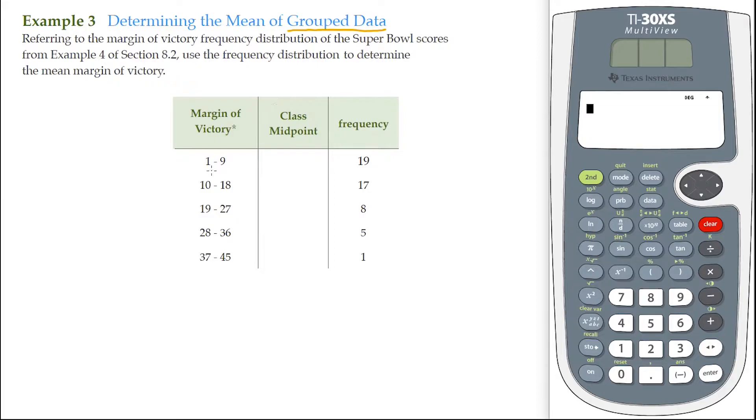And the way to determine the midpoint is we find the average between consecutive lower class limits. So I have a lower class limit of the first class of 1, and I have a lower class limit of the second class of 10. All I have to do is find the average between those two. So how do we find the average? We add the two together and divide by 2. So 1 plus 10, that's 11. Divide that by 2, that's 5 and a half. So that is the midpoint for this particular class.